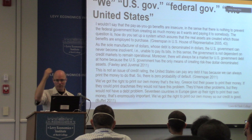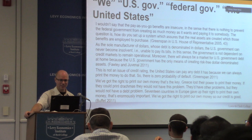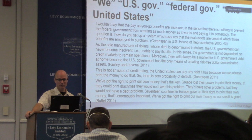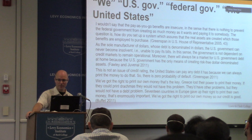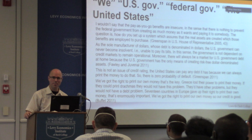On the rhetorical side, here are quotes from commentators who have used the consolidation hypothesis. Greenspan said: 'This is not an issue of credit rating. The United States can pay any debt it has because we can always print the money to do that. There is zero probability of default.' And Buffett: 'We've got the right to print our own money — that's the key. Greece lost their power to print money; if they could print drachma, they would not have a debt problem. Seventeen countries in Europe gave up their right to print their own money — that's enormously important. We've got the right to print our own money, so our credit is good.'